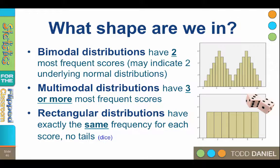If you roll a single die 100 times, how many times would you expect to get a 1? Well, about one-sixth of the time. In fact, you would expect to get each of the scores, 1 through 6, approximately one-sixth of the time. That is a rectangular distribution. Once you add a second die, however, your distribution will begin to look more normal. Rectangular distributions have exactly the same frequency for all scores and do not have tails.